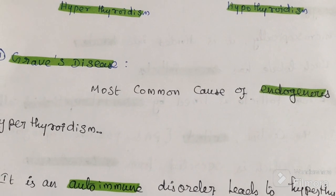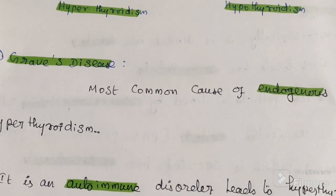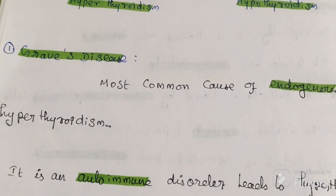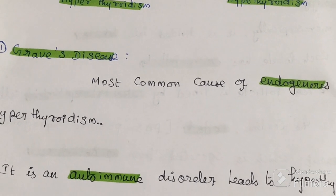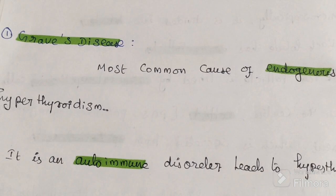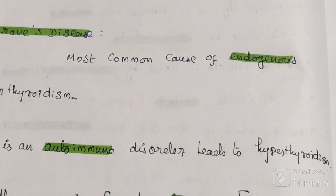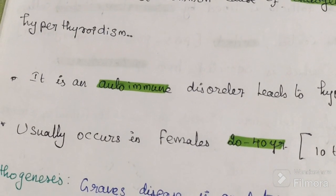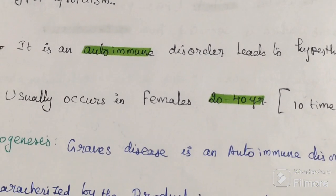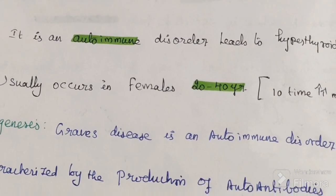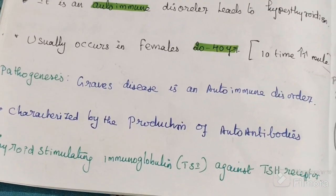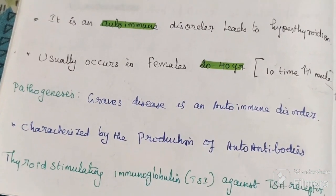Graves' disease is the most common cause of endogenous hyperthyroidism. It is an autoimmune disorder leading to hyperthyroidism, usually occurring in females aged 20 to 40 years. Females are ten times more affected than males. In all thyroid disorders, females are more affected.